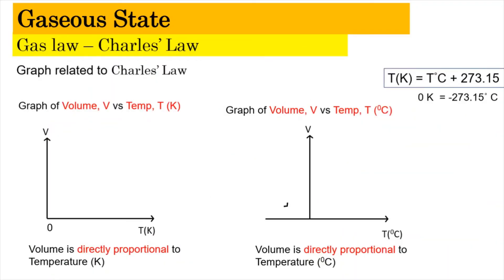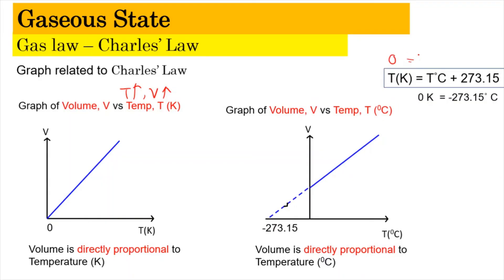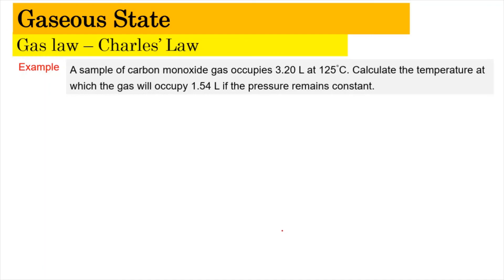For Charles's Law graphs: a V vs. T (in Kelvin) plot gives a straight line passing through the origin. If degree Celsius is used, the graph must be extrapolated to reach −273.15°C, because 0 K corresponds to −273.15°C. Be careful about which temperature unit you use when sketching or interpreting the graph.